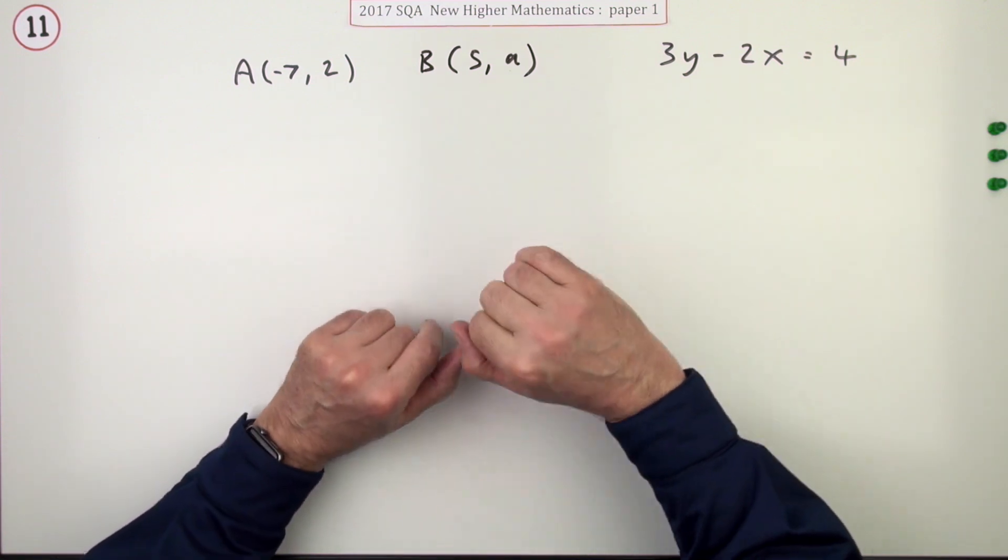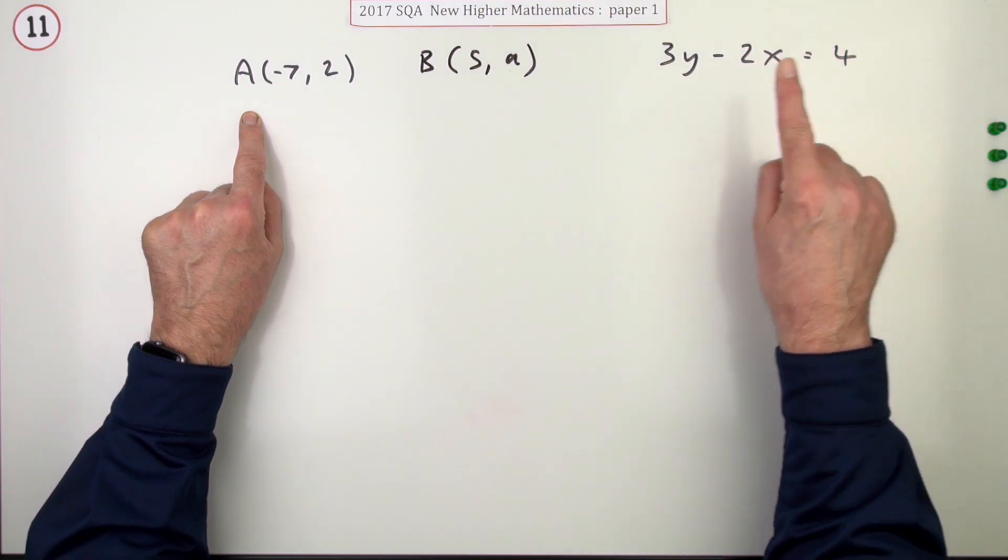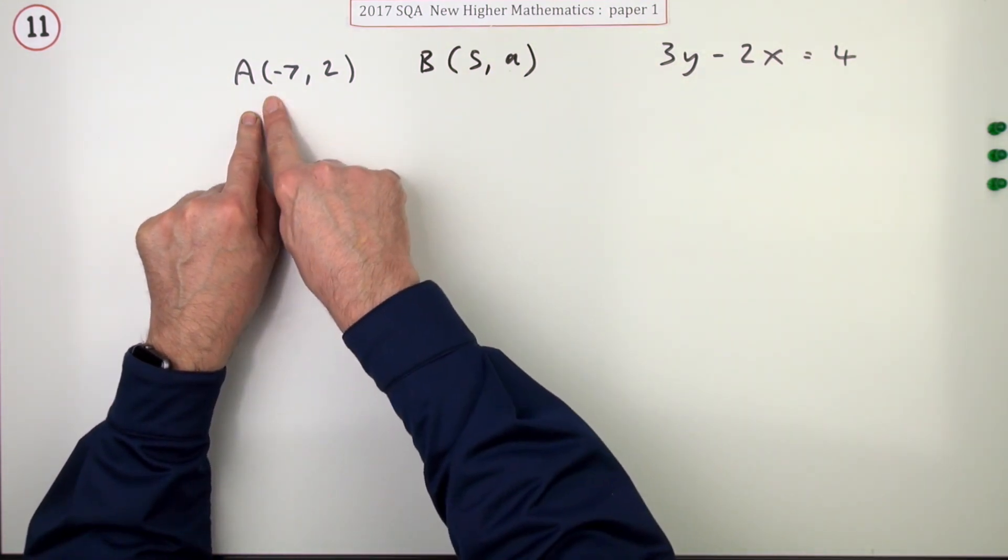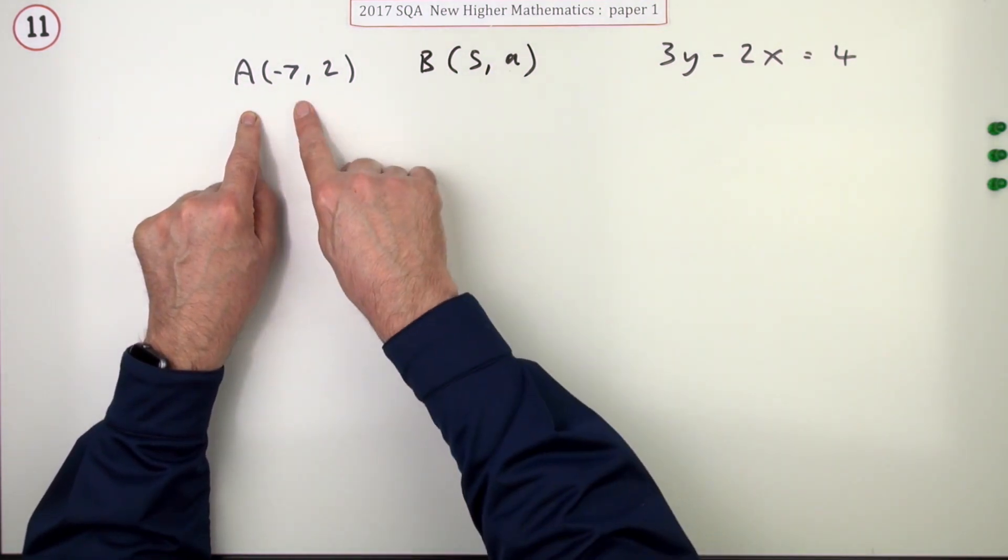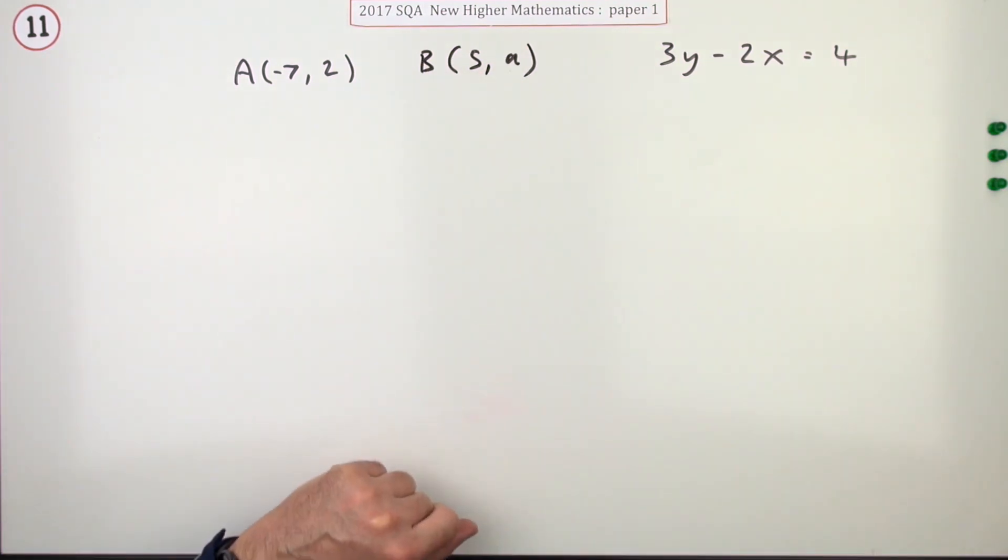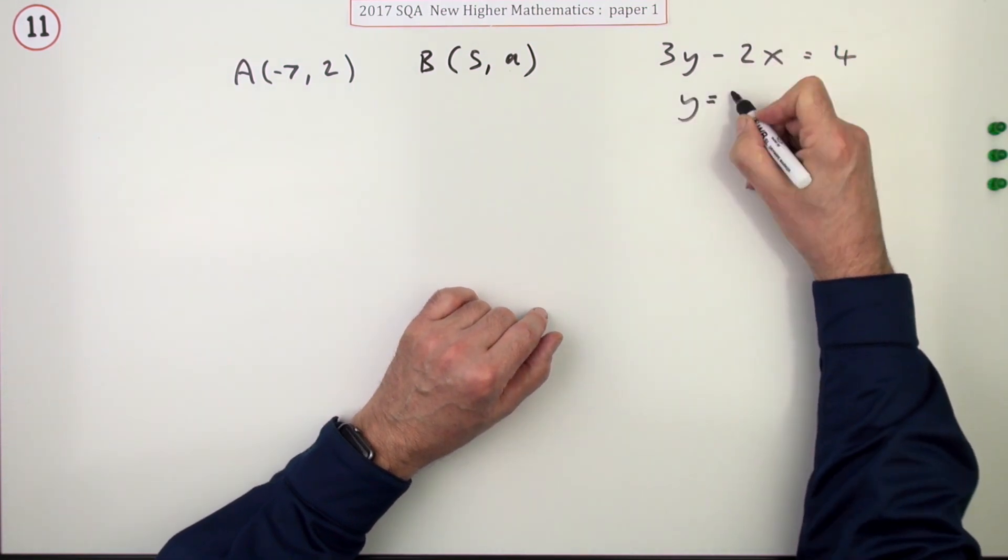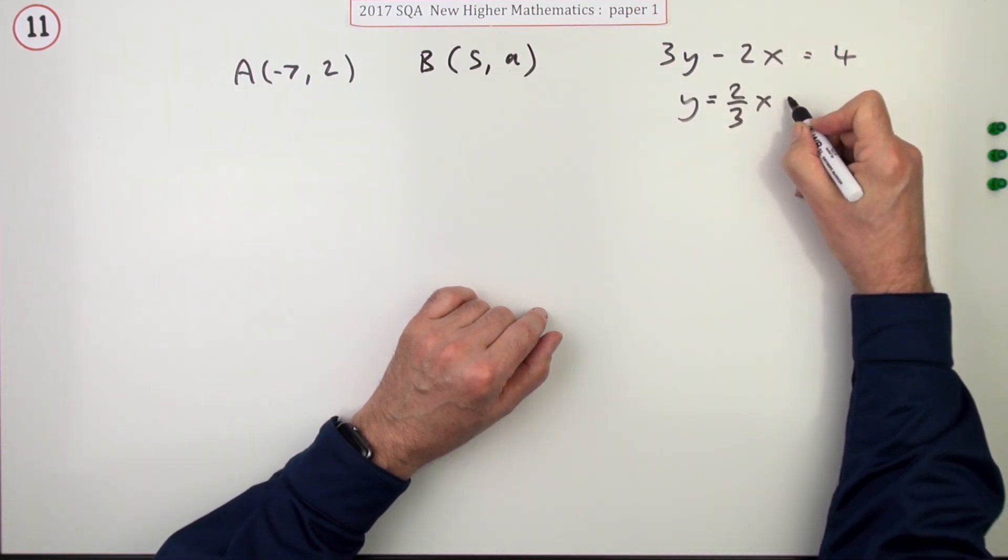Or you could say this instead: if this line is parallel to this one, then you could find the equation of the line through A which is parallel to it, and since B lies on it, fit the coordinates of B into it. So you'd start off as before: rearrange that one there, which was 2/3 of x plus 4 upon 3. So you've got m equals 2/3 for the first mark.